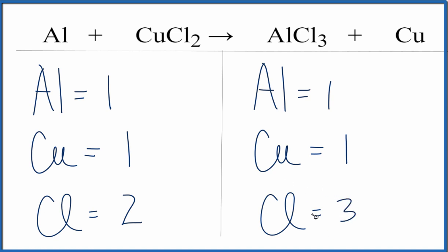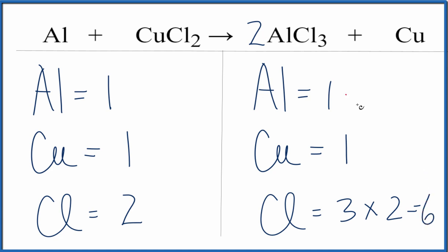Whenever we have an odd number like this, I like to get that to an even number, and that usually makes things quite a bit easier. To do that, I'll put a 2 in front of this AlCl₃. So that means I have 3 times 2, which gives me 6 chlorines, and 1 times 2, which gives me 2 aluminum atoms.